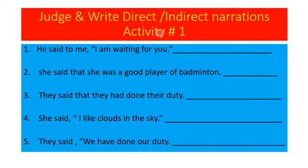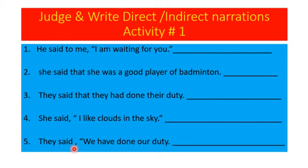Look at this. Judge and write direct indirect narrations — activity number one. Aapne dekhna hai ki kaunsa direct narration hai, kaunsa indirect hai. He said to me, 'I am waiting for you.' Baat karne wala khud bata raha hai — toh yeh direct narration hai. She said that she was a good player of badminton — woh kehti hai ke woh hai, mein nahi — so ye indirect hogai. They said that they had done their duty — indirect. She said, 'I like...' — woh khud baat kar rahi hai, toh direct narration hai. They said, 'We have done...' — this is also direct narration. So aapne yeh judge karna hai.